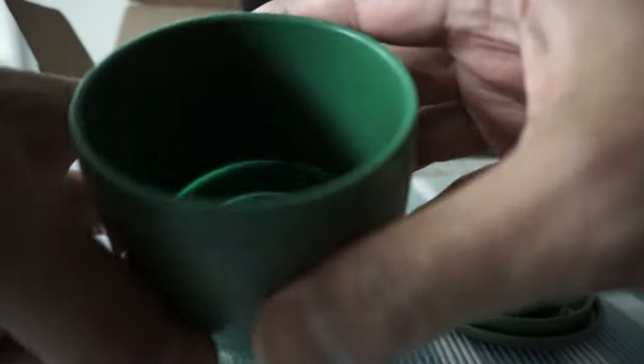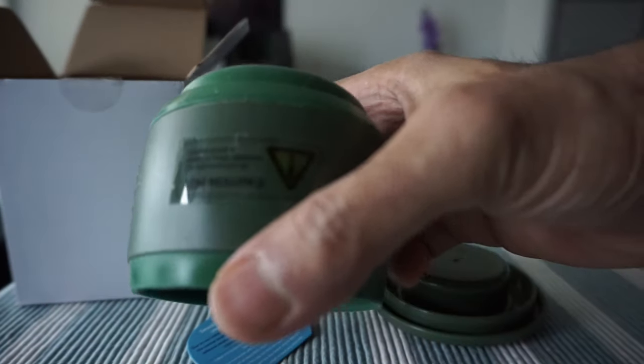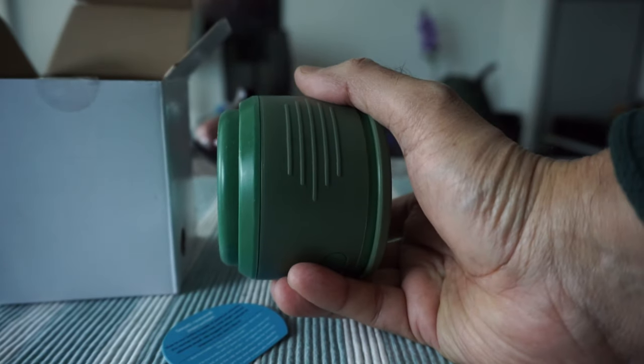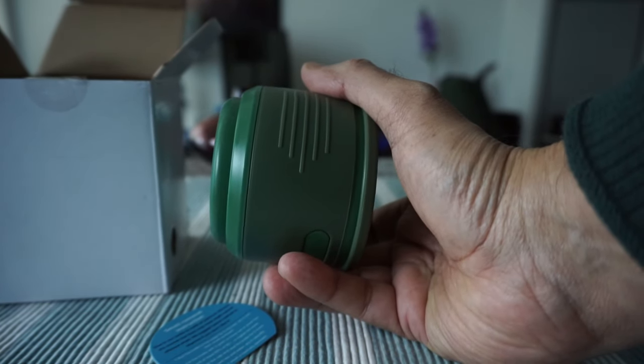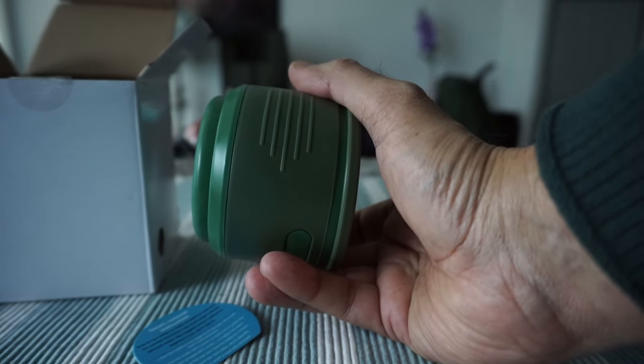Here is the full-size cup. If you want to collapse it again, you have to do it this way and then it's small again. Then you can close the lid again.